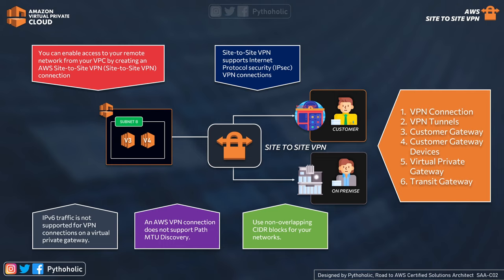When working with Site-to-Site VPN, remember that IPv6 traffic is not supported for VPN connections on a virtual private gateway. When connecting your VPC to common on-premise networks, make sure you don't have an overlapping CIDR block. Also, AWS does not support path MTU discovery, which is mostly used for avoiding IP fragmentation.